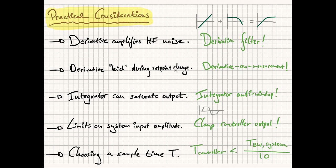Another problem with the derivative term is that it produces a rather large kick during a setpoint change. If you have a step change in the setpoint, the derivative of a step is an impulse, and that will give a nasty kick. One way to get around this is by using derivative on measurement: instead of taking the derivative of the error signal, we simply take the derivative of the fed-back measurement acquired by the sensor. The end result is the same, except we don't have that kick anymore.